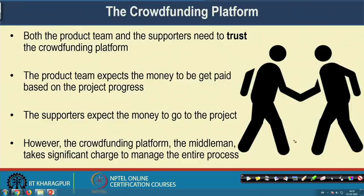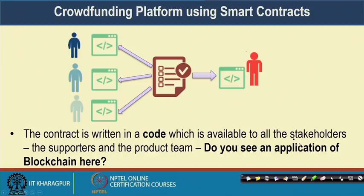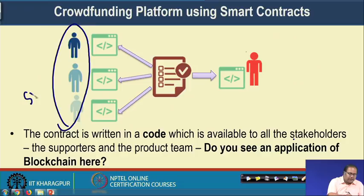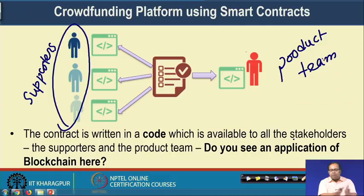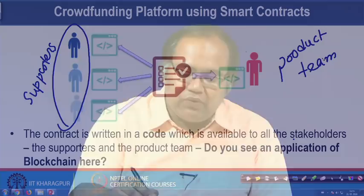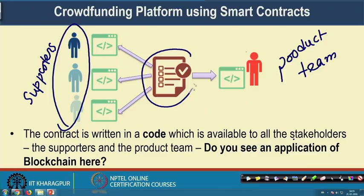Let us see how this kind of crowdfunding platform can be realized with the help of a smart contract. You have a set of supporters and on the other hand you have the product team. The contract between the supporters and the product team is written in code which is available to all stakeholders. This code contains the contract, made available to both the supporters and the product team. Everyone can verify that contract, and if we put that contract inside the blockchain, everyone can verify it but no one can tamper with it.